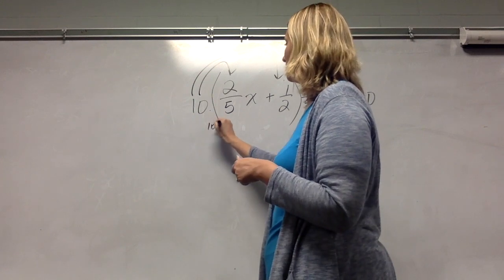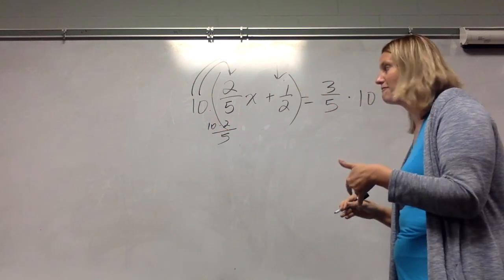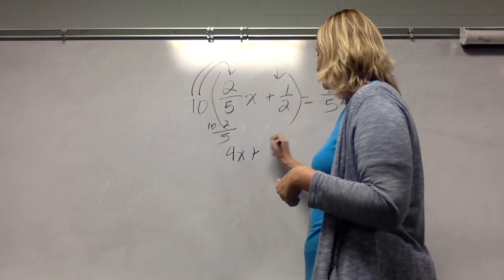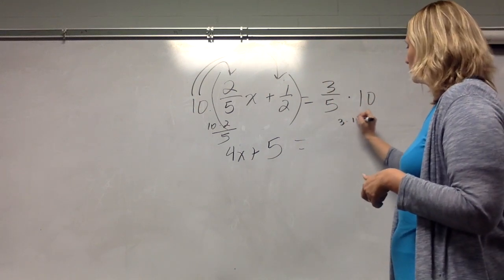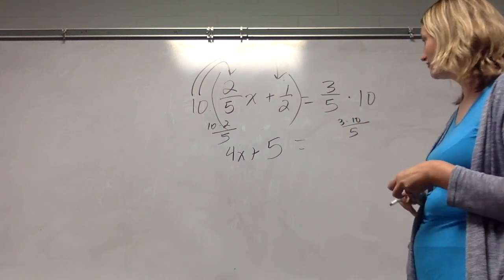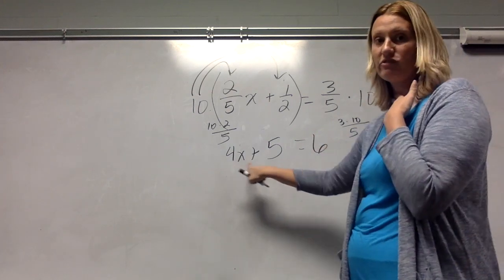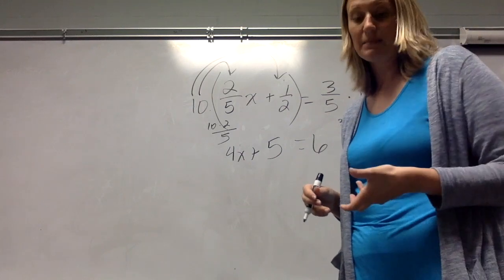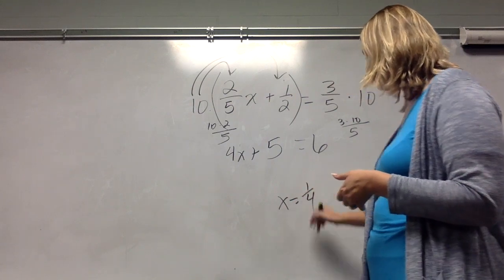In my mind, this is what I do. 10 times 2 divided by 5 is 4x. Half of 10 is 5. Here, in my mind, I'm doing 3 times 10 and then dividing by 5. 3 times 10 is 30. Divided by 5 is 6. Now, from here, this is the equation 4x plus 5 equals 6 that I can go ahead and go through my steps and solve. The answer does end up being a fraction of one-fourth.